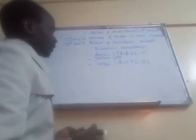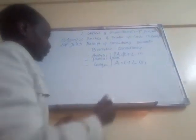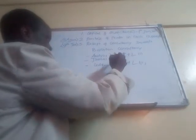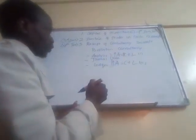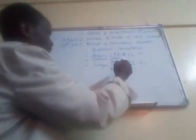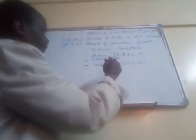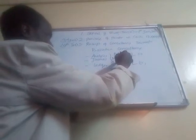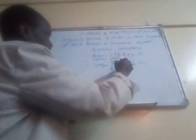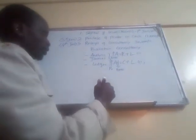The next transaction is the purchase of a printer in cash. A printer is an asset — it can give us future economic benefits. When we purchase it, the asset of printer goes up, and the asset of bank also goes down because we paid in cash. That is the effect in the accounting equation.